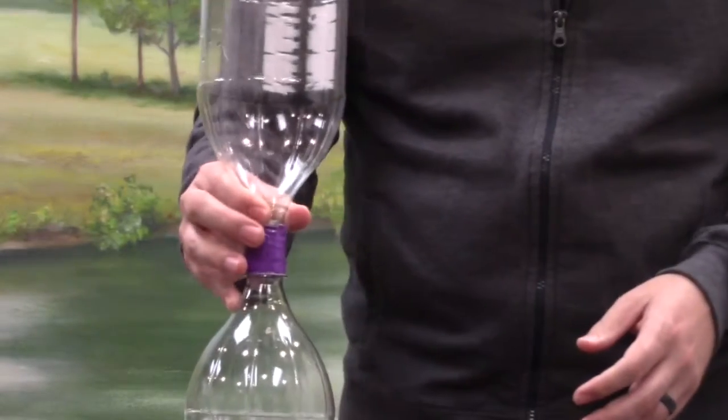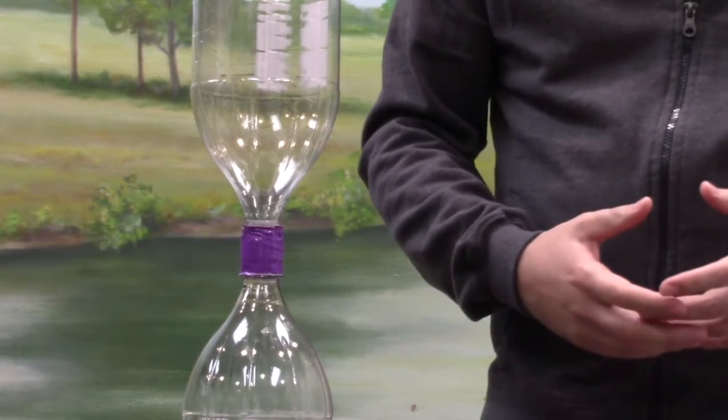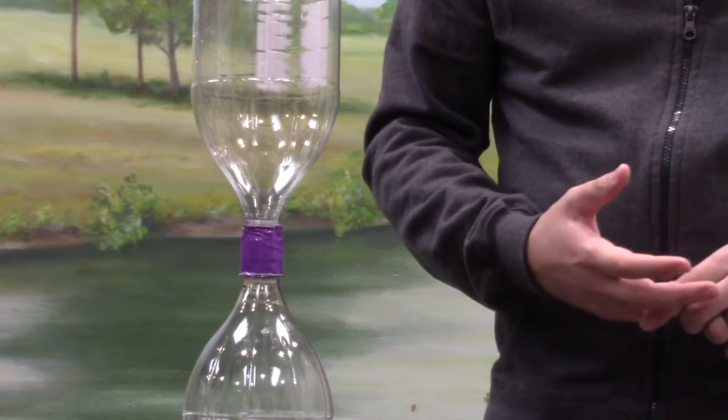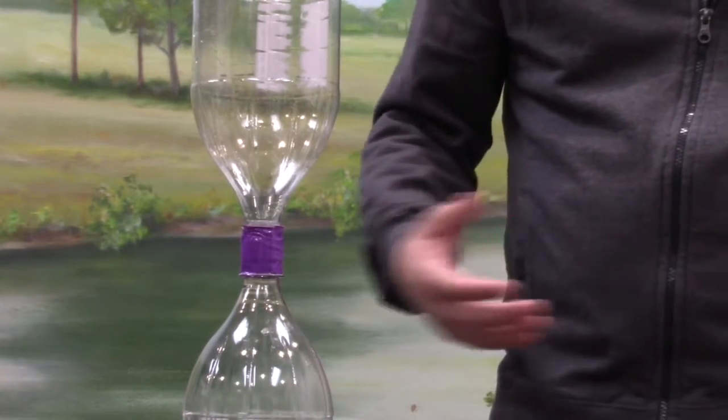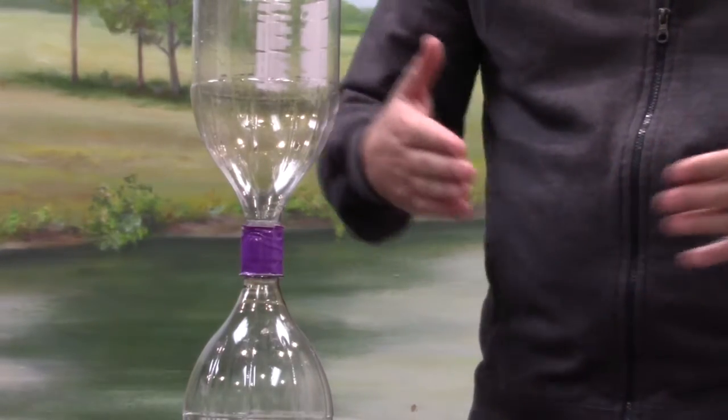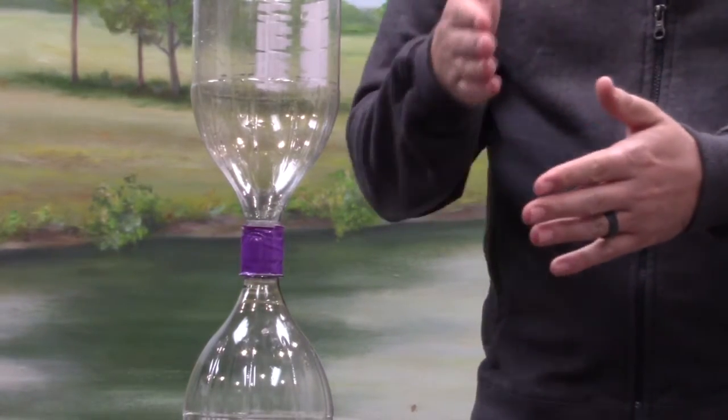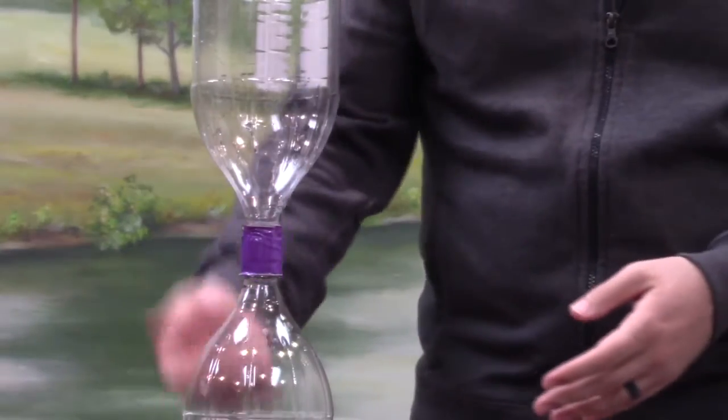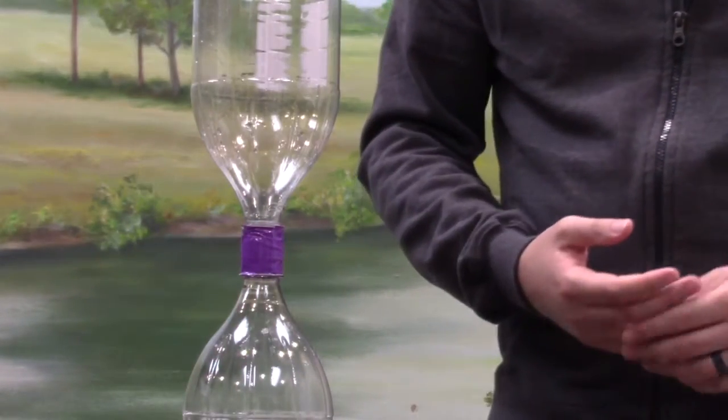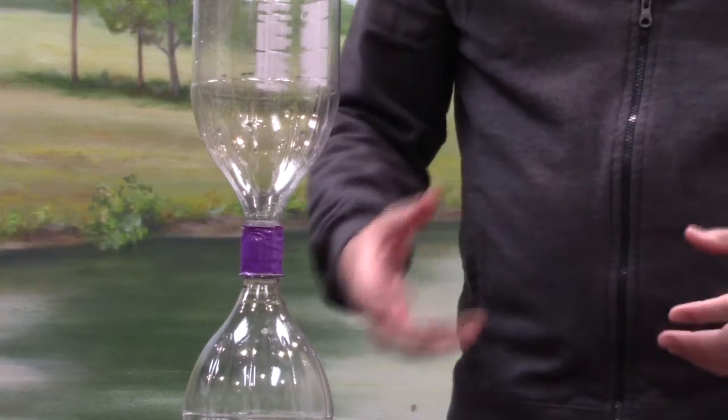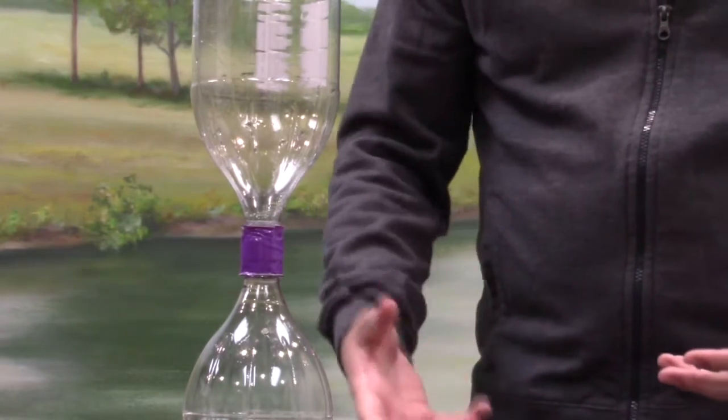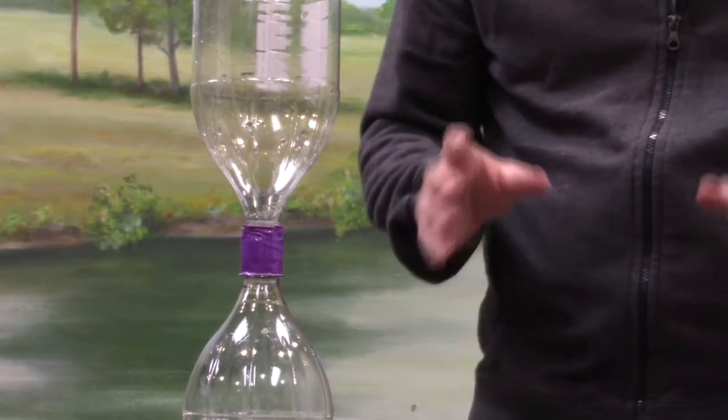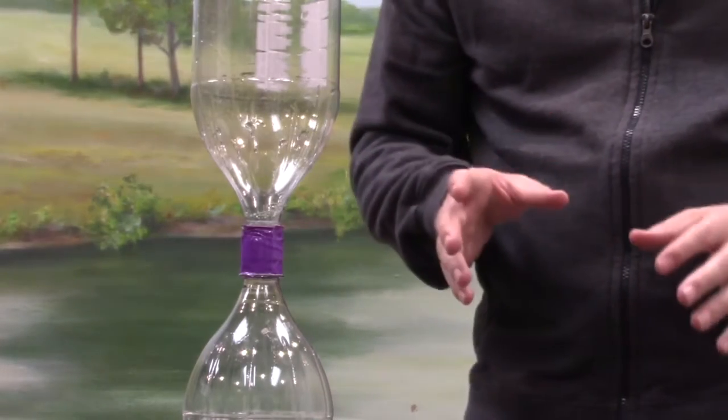If that type of fluid motion were to happen in a natural setting, like, say, in a river, if you have two flows flowing past each other, and they tried to push through each other and take turns the way the water and the air were doing there, well, you'd have a really, really rough river, wouldn't you?